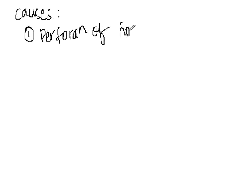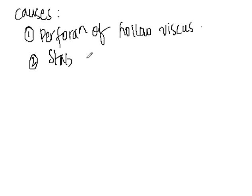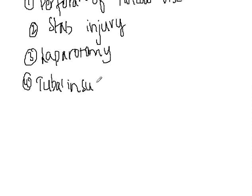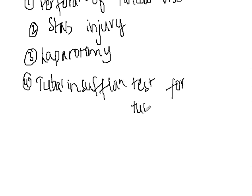It can be due to perforation of a hollow viscus — any perforation. It can be due to duodenal ulcer, perforation of gastric ulcer, perforation of Meckel's diverticulum, or malignant ulcers. It can be due to stab injury in the abdomen, or sometimes it can be due to laparotomy, or it can be due to tubal insufflation test — the test which is called as tubal insufflation test for tubal patency. All these can lead to gas under the diaphragm.